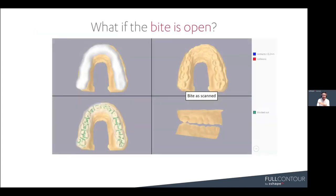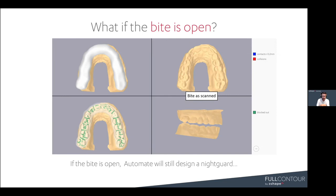But what if the bite is open? If you upload a case with an open bite, we'll still design a Nightguard for you. However, you'll see that your bite as scanned is open, and in the upper left there are no occlusal contacts. You could still use it and fit it to your model, but you may have to make some fit adjustments against the opposing.